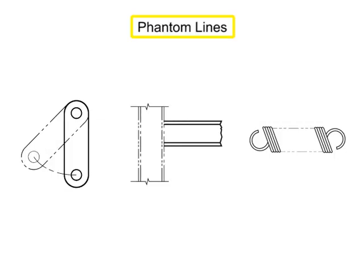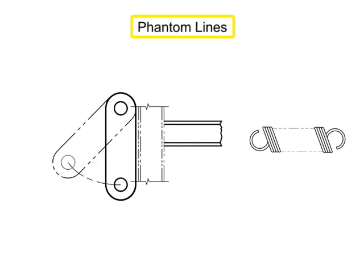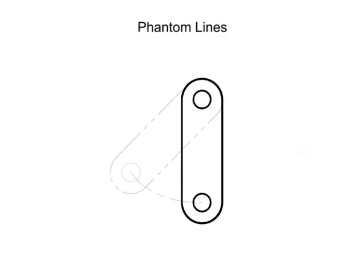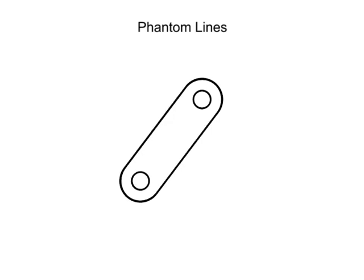Phantom lines are composed of alternating one long and two short dashes evenly spaced with a long dash at each end. They are used in three ways. The first is to indicate the alternate position of moving parts.